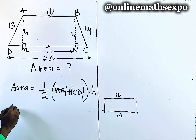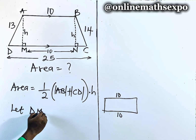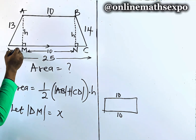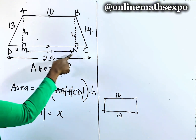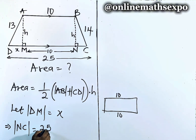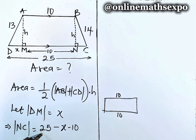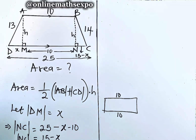Let length DM equal x. If DM is x, and MN is 10, we can find NC: length NC equals the total length 25, minus x, minus 10, which gives us 15 minus x. So length NC equals 15 minus x, meaning that particular bottom-right segment is 15 minus x.